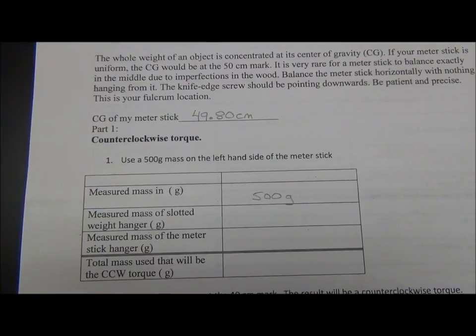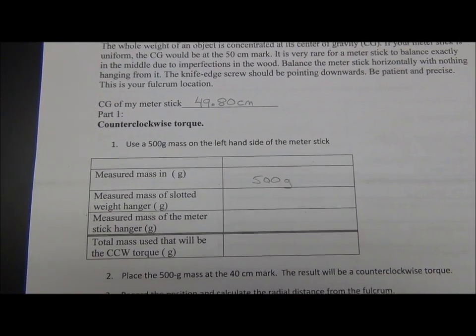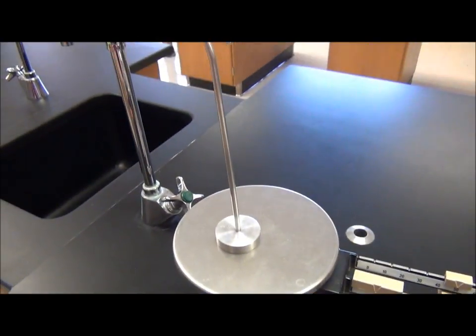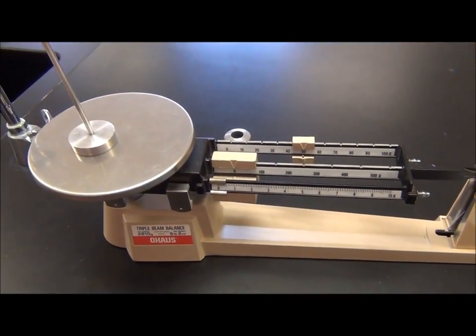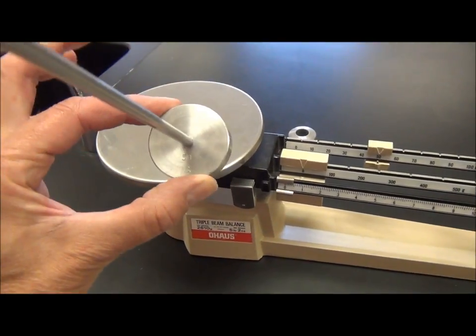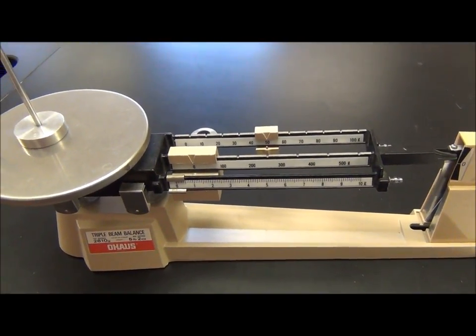Okay, we're going to put 500 grams in brass on the left-hand side of our meter stick. It also says we need the measured mass of the slotted weight hanger. That is this. We're going to pop this on the triple beam balance. I got lucky this time around. It says it's 50 grams. It actually was when I put it on my zeroed balance.